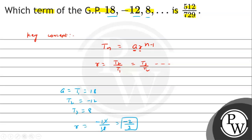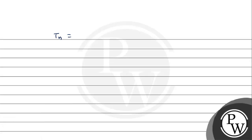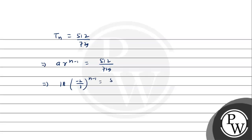Now we have the nth term tn equal to 512 divided by 729. Let's assume it is the nth term and plug in: a times r raised to the power n minus 1 — we have a as -18 and r as -2 by 3 — raised to the power n minus 1, equal to 512 by 729. Dividing both sides by -18, we get -2 by 3 raised to the power n minus 1 equal to 512 by 729 into 1/18.